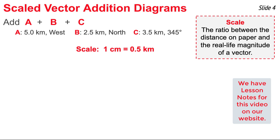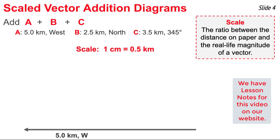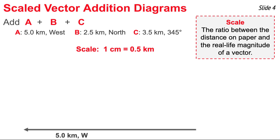We begin with vector A. I'm going to choose a starting point and draw a 10-centimeter vector westward, which represents a 5-kilometer vector directed westward. Where the arrowhead of A ends, I begin vector B, starting its tail at the end of vector A. I draw vector B five centimeters upward.